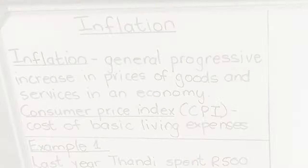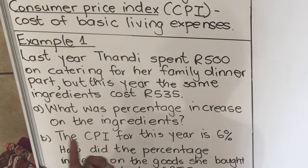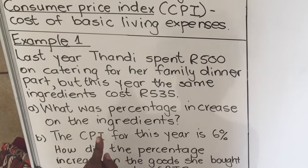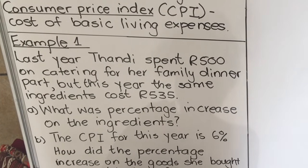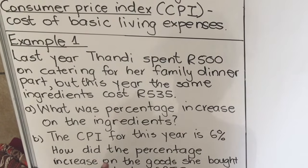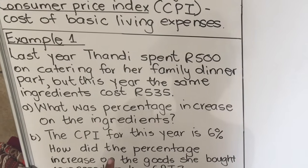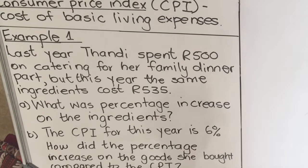Let's look at Example 1. Tandy spent 500 rands on catering for her family dinner, but this year the same ingredients cost 535 rands.